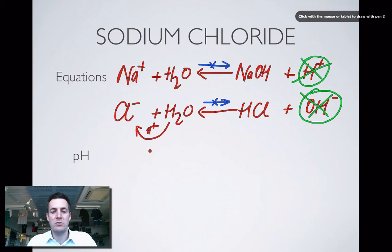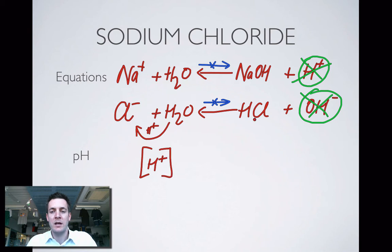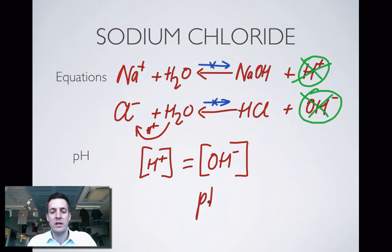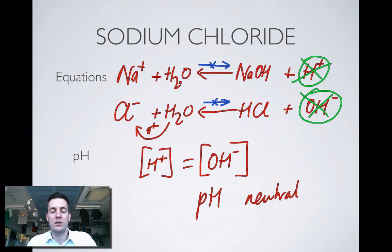What can we say about the pH of sodium chloride? It relates to the concentration of H plus ions. There is no excess of H plus ions and no excess of OH minus ions in solution, so the concentration of H plus equals the concentration of OH minus and the pH is neutral. Sodium chloride is a neutral salt because it contains two neutral ions — ions that don't hydrolyze in water and don't produce acidic or basic ions.